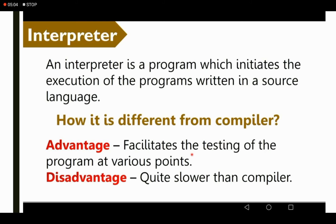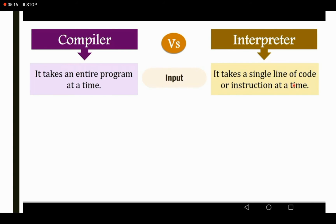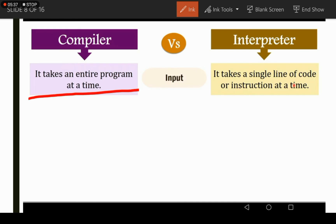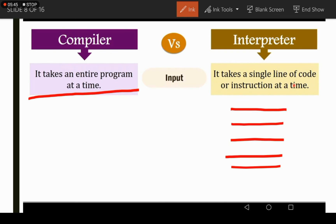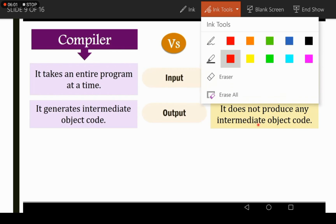Let's discuss the differences between compiler and interpreter in more detail. Regarding input: a compiler takes an entire program at a time, while an interpreter takes a single line of code or instruction at a time. This means the compiler converts the whole program at once, while the interpreter converts a program line by line. Regarding object code: the compiler generates intermediate object code, while the interpreter does not produce any intermediate object code, meaning the compiler uses memory for this.